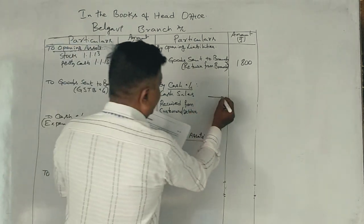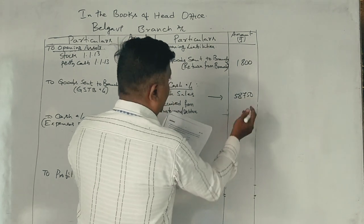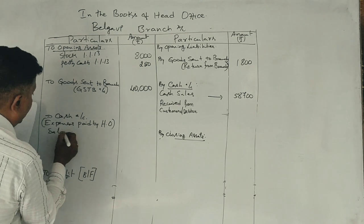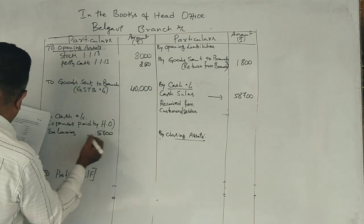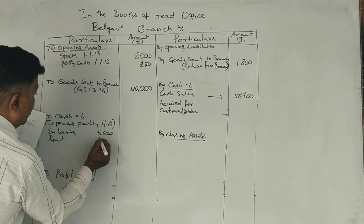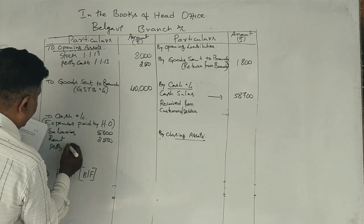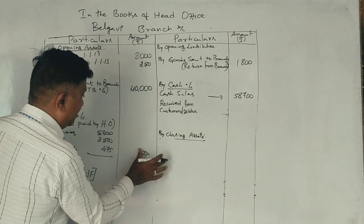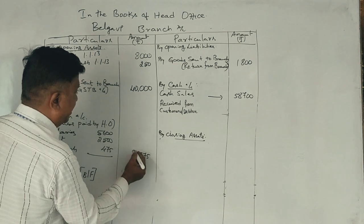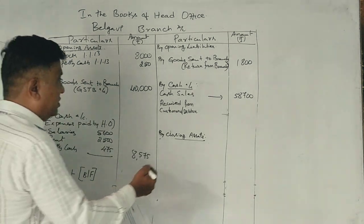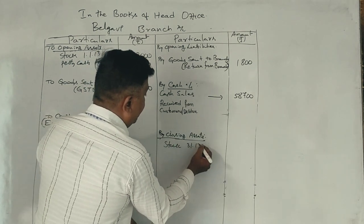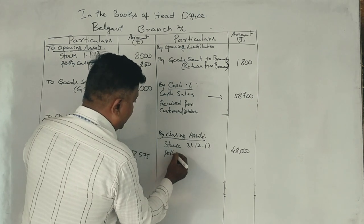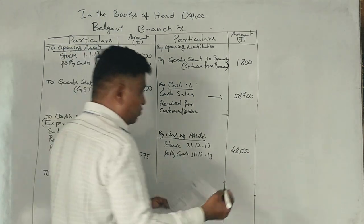Cash sales: 58,700. Cash sent by head office for expenses — salaries: 5,600, rent: 2,500, petty cash: 475 — total expenses: 8,575. Closing stock at branch on December 2013: 48,000. Petty cash December 2013: 180.